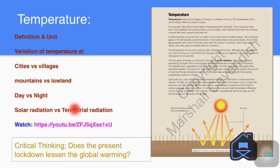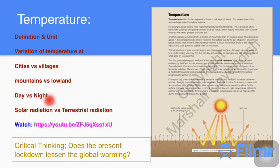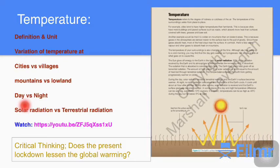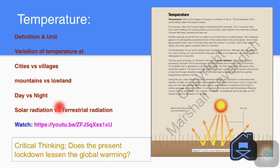So how is the temperature of day and night different from each other? During the day, solar radiation exceeds terrestrial radiation and the Earth's surface becomes warmer. At night, no solar radiation is received and the surface of the Earth cools.